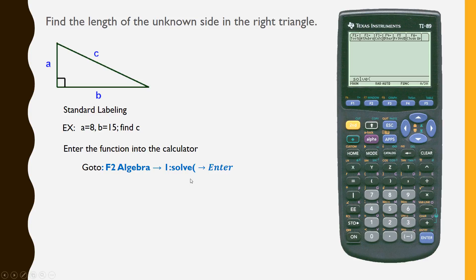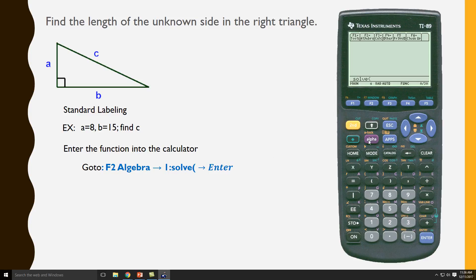C squared - I don't know C, so I will hit alpha. C squared, that is equal to A squared and A is 8 plus B squared and B is 15.